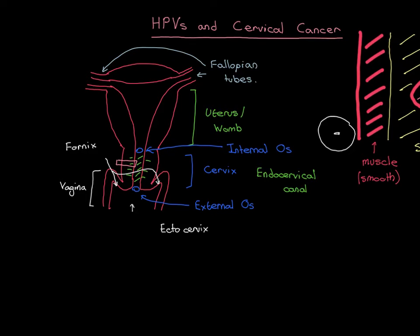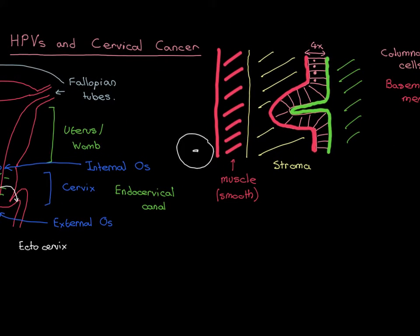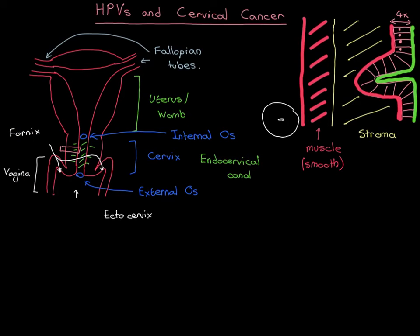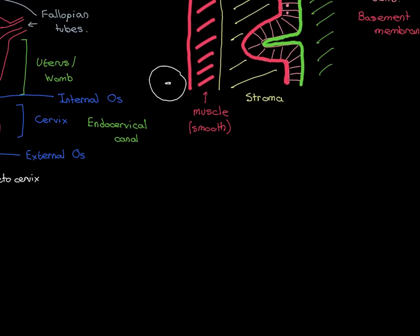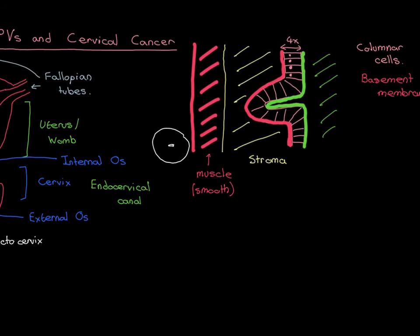The structure of the ectocervix is very similar: around the outside you have the muscle layer, then a stromal connective tissue layer, then an epithelium sitting on top. But the type of epithelium is completely different — it's no longer a columnar epithelium. Instead it's a squamous stratified epithelium. This means there is a junction between the columnar epithelium and the squamous stratified epithelium, which prior to puberty is at the external os — called the squamo-columnar junction.